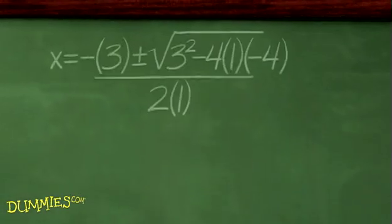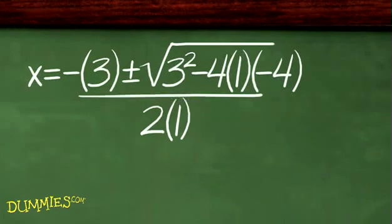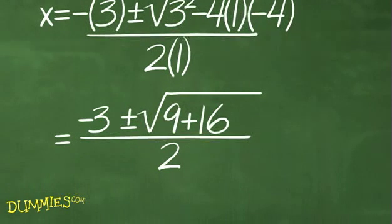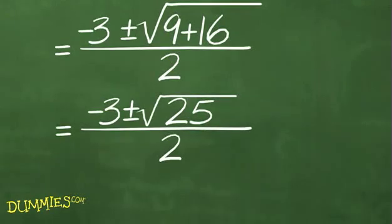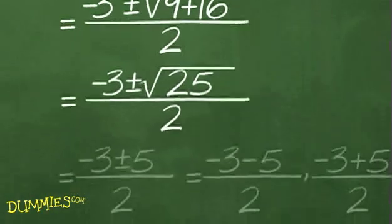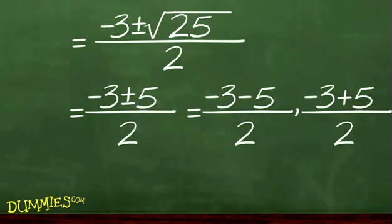It looks like this. x equals negative 3 plus or minus the square root of 3 squared minus 4 times 1 times negative 4 over 2 times 1. Which equals negative 3 plus or minus the square root of 9 plus 16 over 2 equals negative 3 plus or minus the square root of 25 over 2 equals negative 3 plus or minus 5 over 2 equals negative 3 minus 5 over 2 or negative 3 plus 5 over 2.